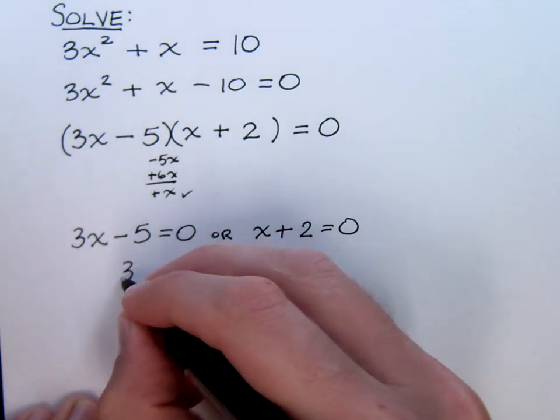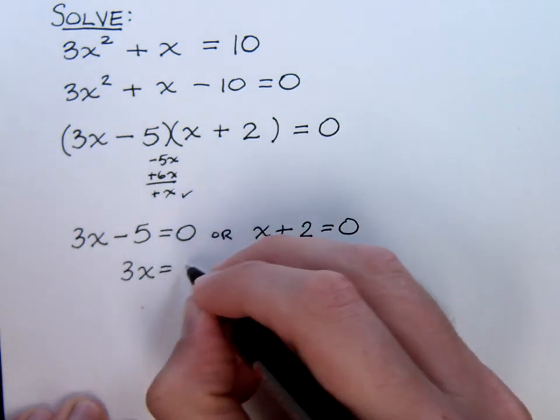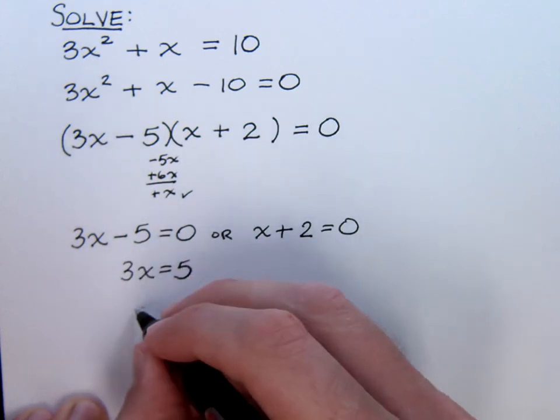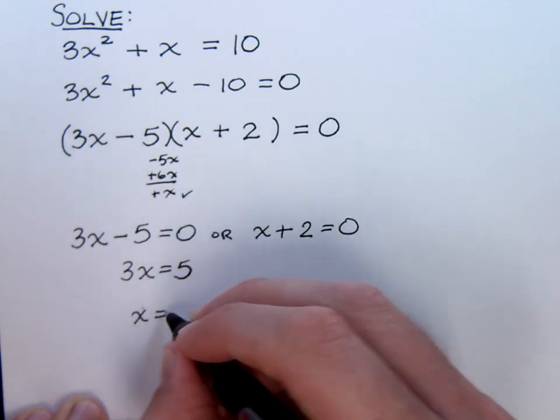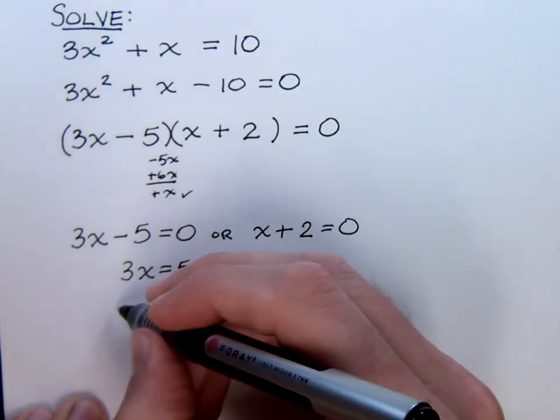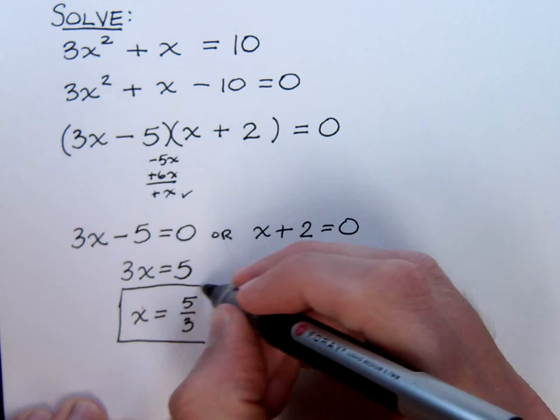Now, solving this guy is something that we should really be able to take care of in our heads, but if you want to take it step by step, you can. Add the 5 to both sides, and then divide both sides by 3. So here we have x equals 5 thirds.